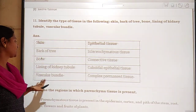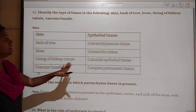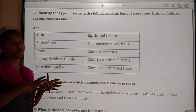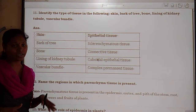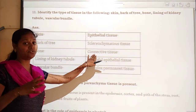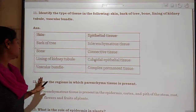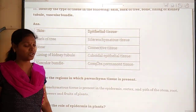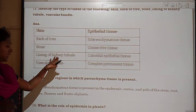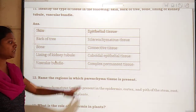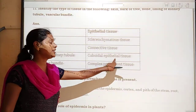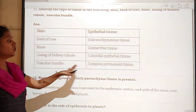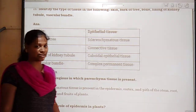Bark of a tree contains cork tissue. Bone is connective tissue — bones connect one to another in our body. Lining of the kidney contains cuboidal epithelial tissue. Vascular bundle contains complex permanent tissue.